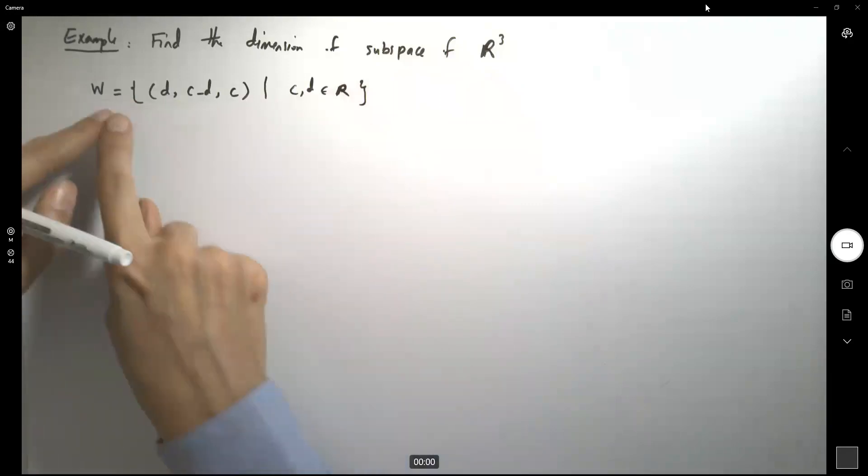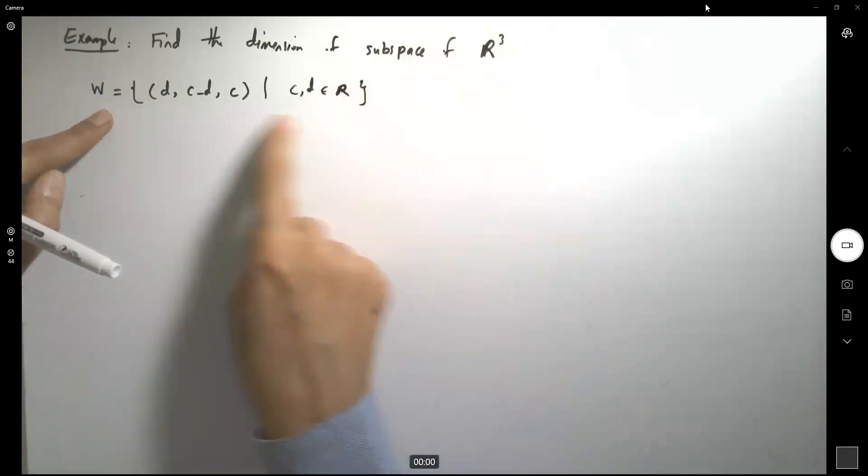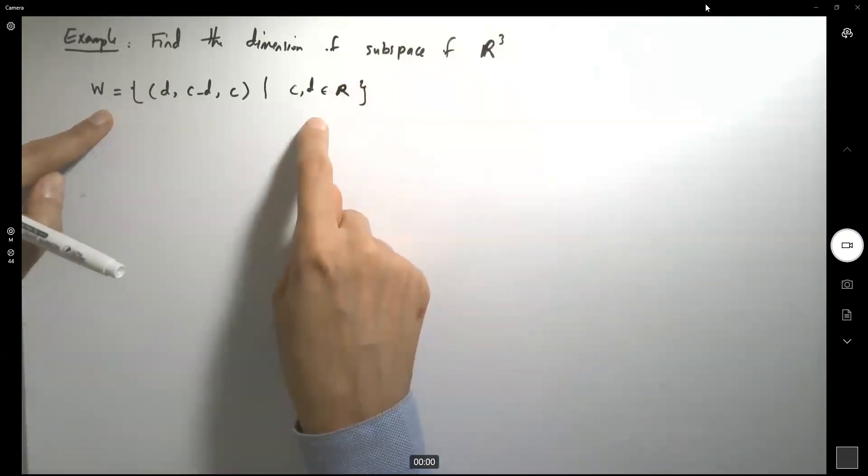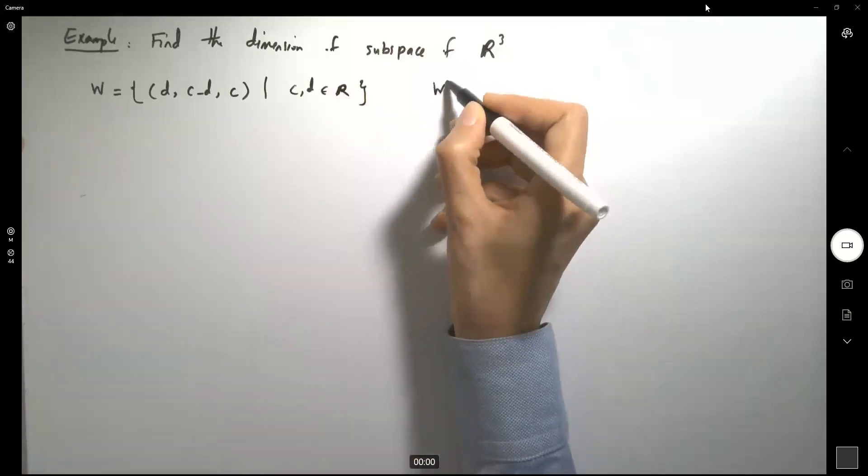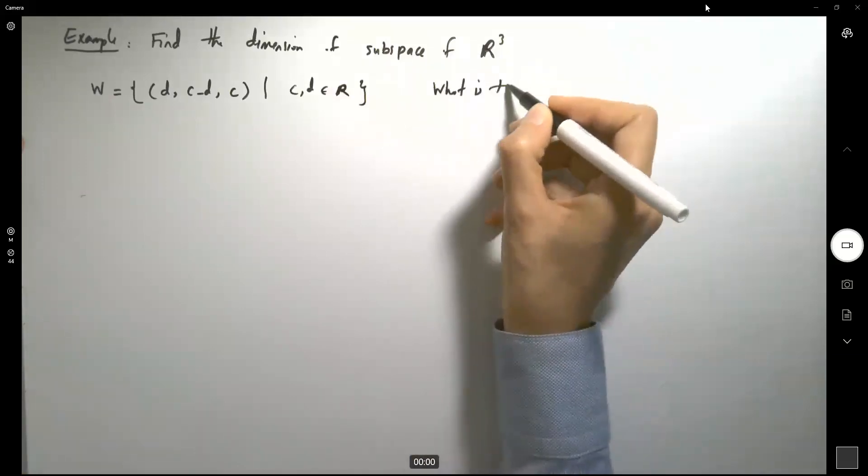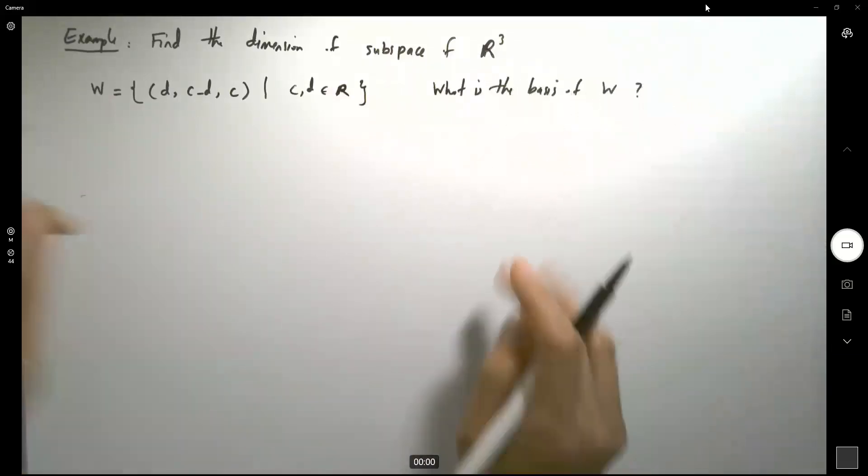So what is the dimension for this subspace? Which set generated this subspace? So this is basically what are we asking. What is the basis of W? So these two questions are equivalent to each other.